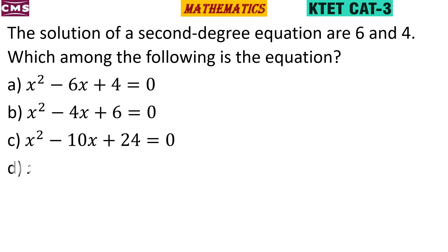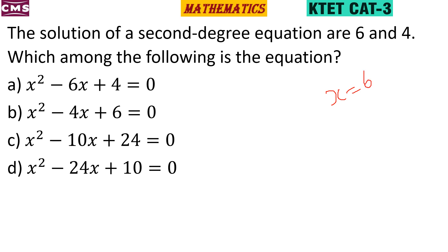If we have 2 solutions, we have a second degree equation. We have to multiply the factors. If x equals 6, then the factor is (x - 6). If x equals 4, then the factor is (x - 4). We multiply these two factors together.